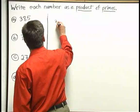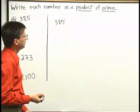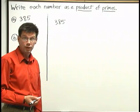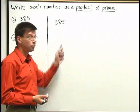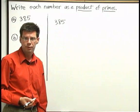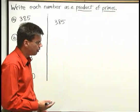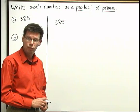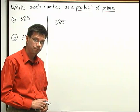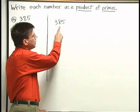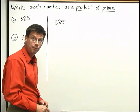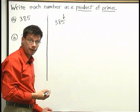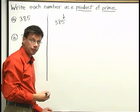Our first number is 385. Sometimes when a number is small, you have an idea on how to break it down by remembering a fact from the multiplication tables. Well, I don't remember 385 from the multiplication tables — it's a pretty large number. With larger numbers, one way to get started is to think about dividing another number into it. Because there's a 5 in the ones place, I know 5 will go into 385. So let's go ahead and do that division.